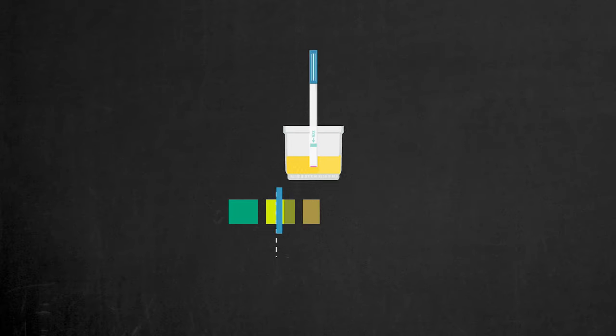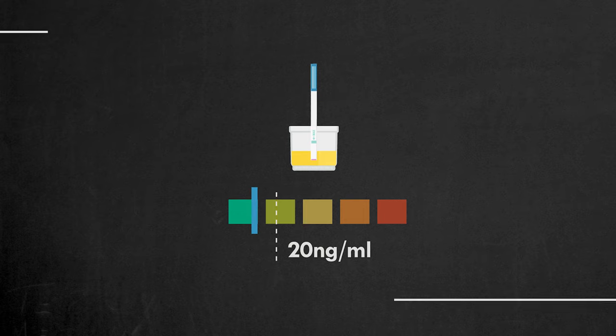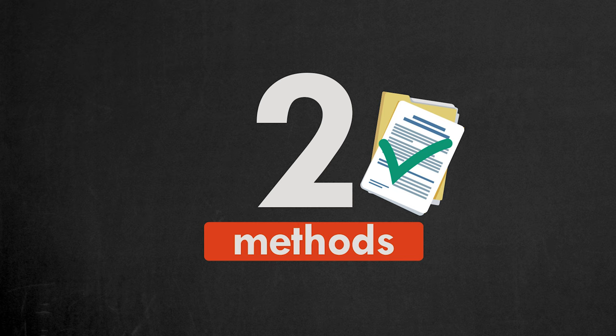To pass your drug test, you need to lower the concentration of drug metabolites in the urine below the detectable level. There are only two methods to pass the drug test without cheating.